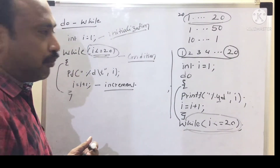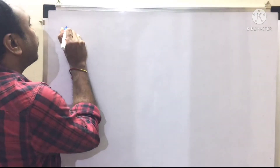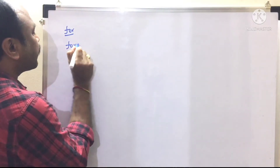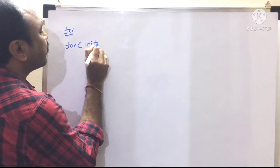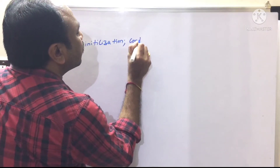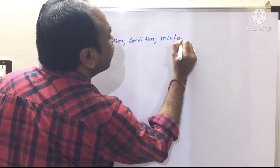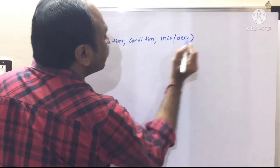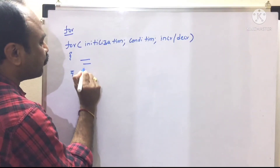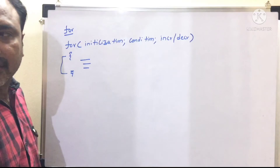To overcome this problem, they introduced the for statement. The syntax of for is: for(initialization; condition; increment/decrement). If there is a single statement in the for body, no need for braces. If you are going to write multiple statements, then use start and end braces.